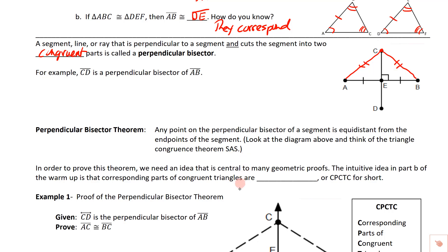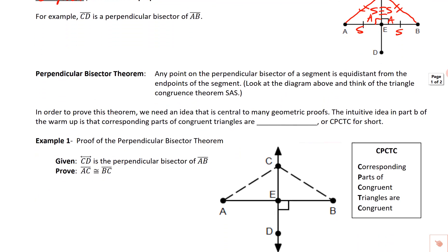The reason this works — thinking of side-angle-side — is that those are both right angles, so those angles are congruent. These two sides from the bisector are exactly the same. And then there's a common shared side, so we have a side, an angle, and a side matched with another side, angle, and side. This side is congruent to itself, and that's the key to figuring all of this out. We're going to do a proof in just a second.